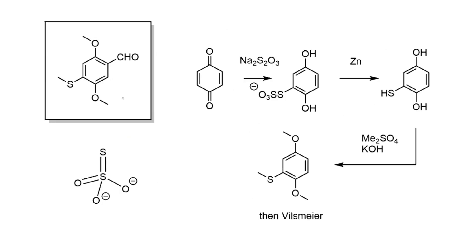The first way to make these benzaldehydes starts from benzoquinone, which was reacted with sodium thiosulfate to form an adduct, with aromatization of the ring because extra electrons are added from the nucleophilic attack of the thiosulfate. That presumably goes through sulfur — something like that — with the thiosulfate anion attacking.